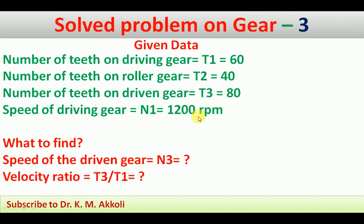The speed of the driving gear N1 is 1200 RPM. We need to find the speed of the driven gear N3. The velocity ratio can be given as T3 divided by T1, which also equals N1 divided by N3.